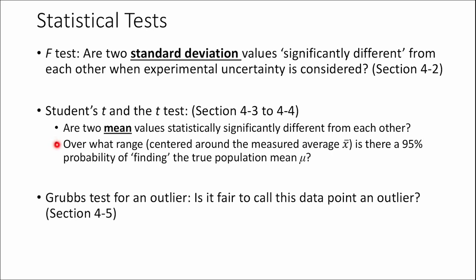Another thing we use the T distribution for is finding confidence intervals. You can phrase that as: I got my average — how far above and below the average do I need to spread to have a 95% chance that the true answer is in there somewhere? That's a confidence interval. We'll also quickly talk about a test for determining if a measurement is an outlier or not — the Grubbs test. Can I throw away this data point?